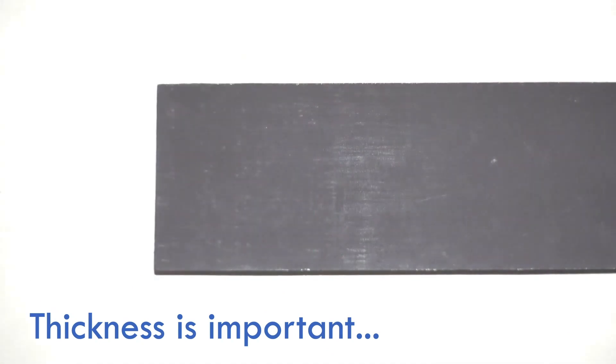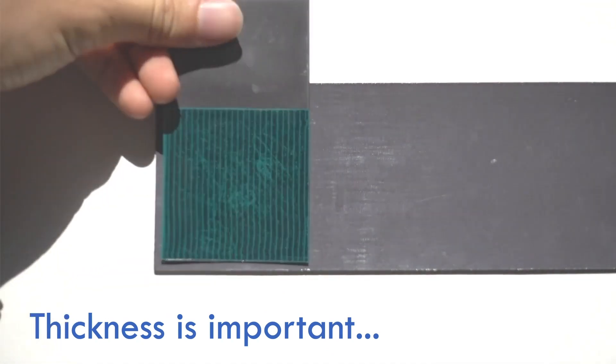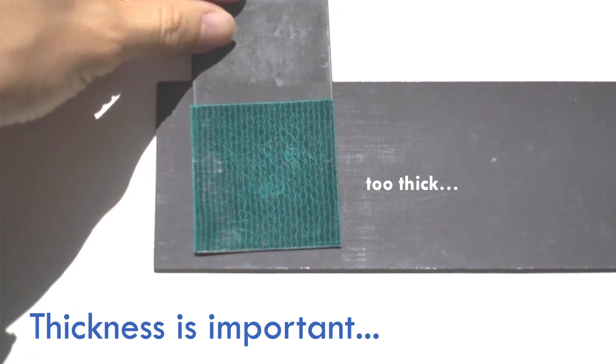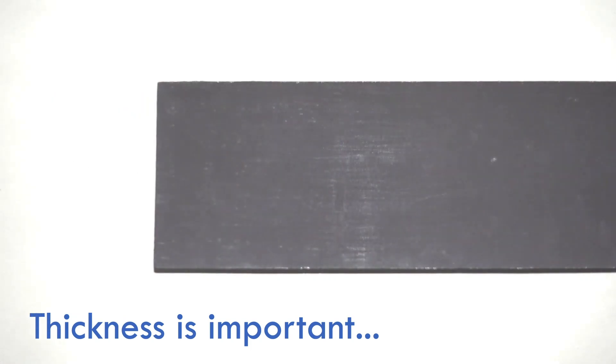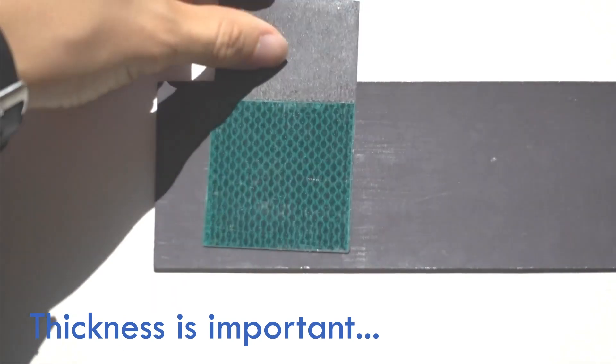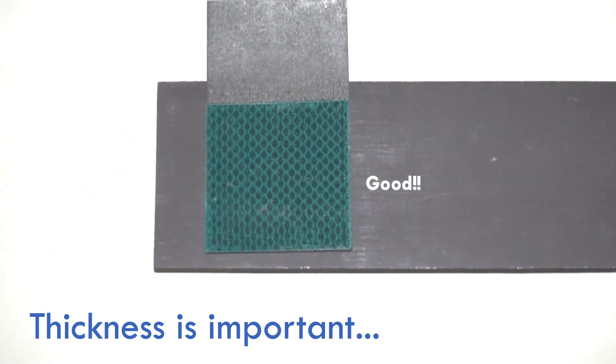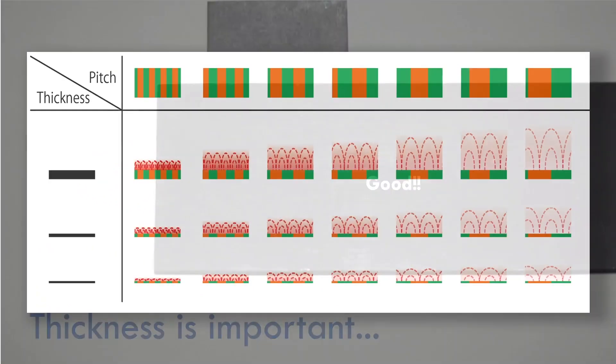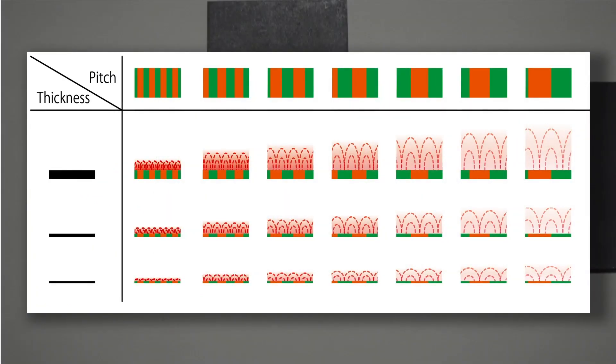To produce a clear checkered magnetic pattern, it requires a magnetic sheet of appropriate thickness. This is because the magnetic flux density around the magnetic sheets varies greatly depending on the thickness of the magnetic sheets and the pitch of the magnetic stripes.